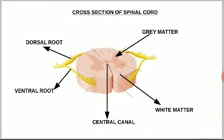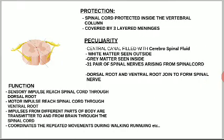Now before we go to the function, let us recap the peculiarities. There is a central canal filled with cerebrospinal fluid. White matter is outside and gray matter is inside. There are 31 pairs of spinal nerves, and these spinal nerves are formed by the joining of the dorsal root and ventral root.